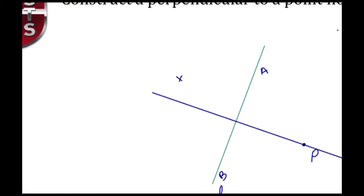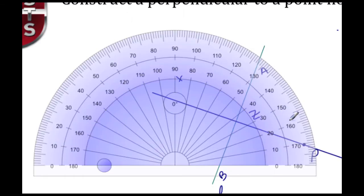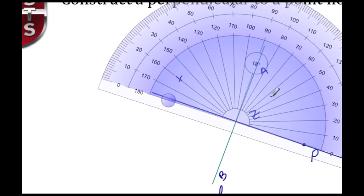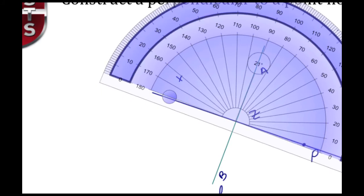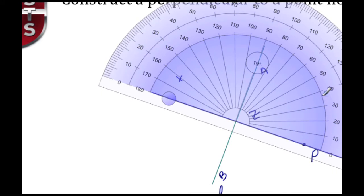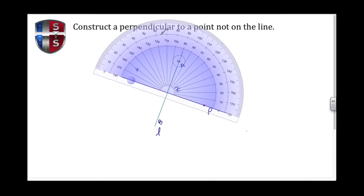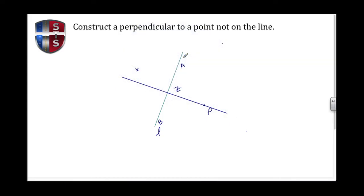What we're going to do now is call up the protractor to make sure that this intersection, which I'm going to call Z, creates a 90-degree or perpendicular angle. With the protractor, let's rotate and place it on the vertex. Let's make sure it begins at zero, which it does. As we go around, we see that the line is in fact very close to 90 degrees. That proves that using the compass and straightedge, we were able to construct a perpendicular that goes through a point on line L.